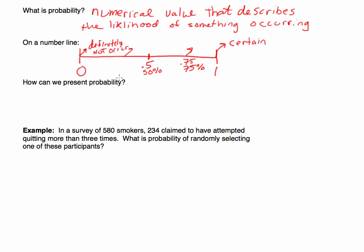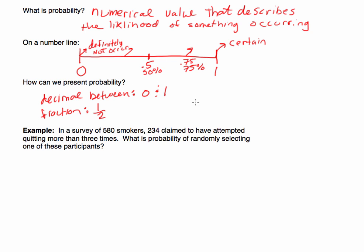So how can we present probability? Probability could be presented as a decimal between 0 and 1, as we just saw. It could also be written as a fraction — for example, 50% or 0.5 is 1 out of 2, so one-half probability. Or it could be written as a percent, like the 50% we mentioned.